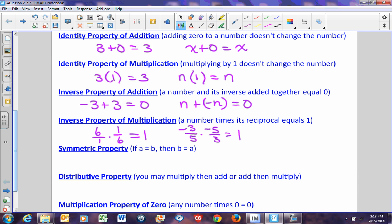The symmetric property says if a equals b, then b equals a. And this one sometimes is hard for people to understand. Basically it says 2 times 3 equals 6. If 2 times 3 equals 6, then 6 has to equal 2 times 3. That's basically all it's saying. You can change where the equal sign is, they're still equal.